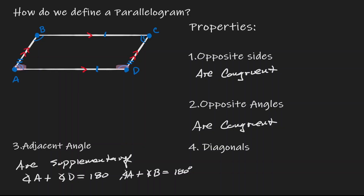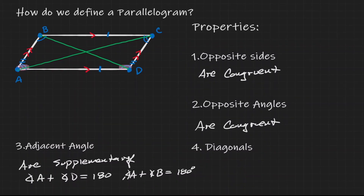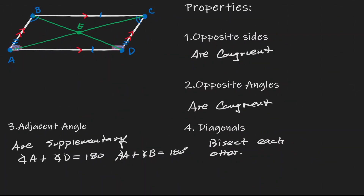In terms of the diagonals of this parallelogram, if we draw the diagonal connecting point A to point C, and the other diagonal connecting point B to point D, these diagonals intersect at a point — let's call this point E. The diagonals bisect each other, meaning line segment BE is congruent to ED, and line segment AE is congruent to EC.